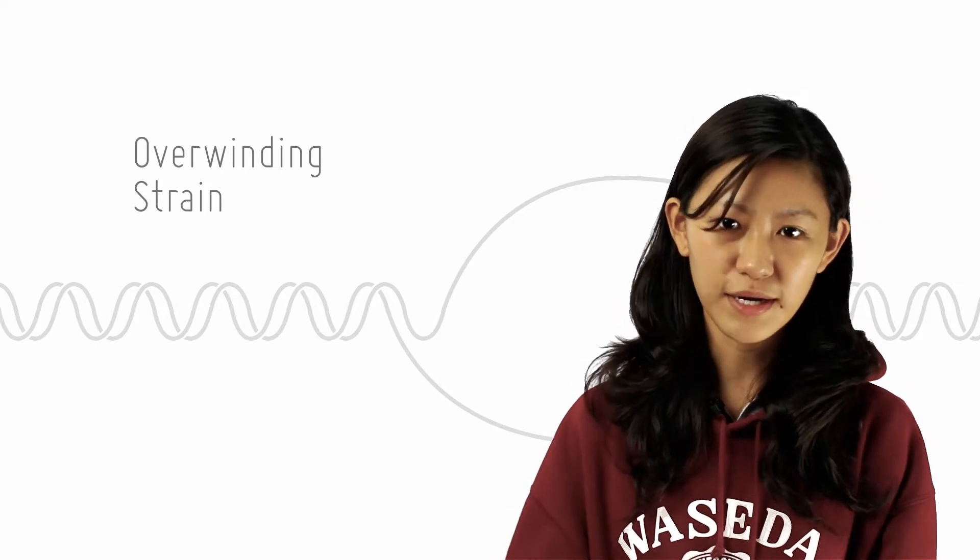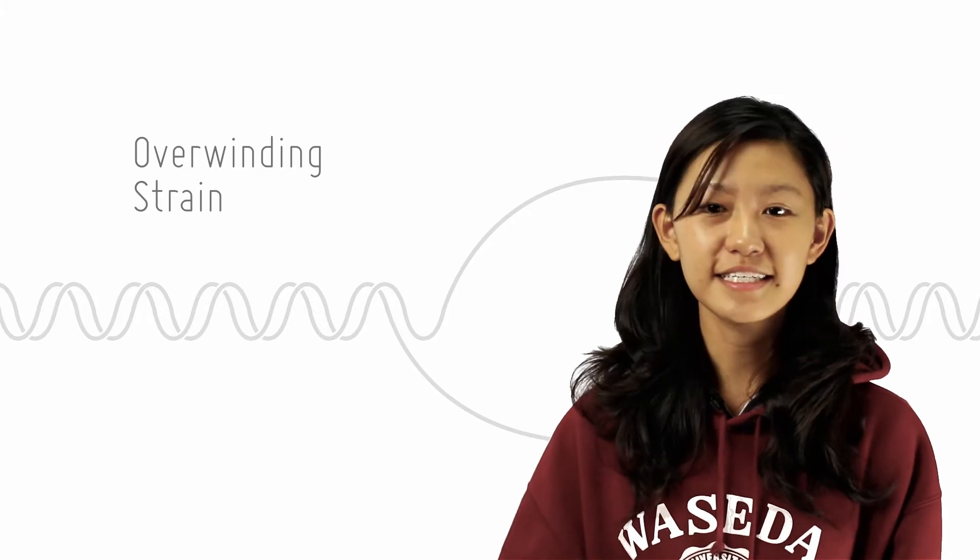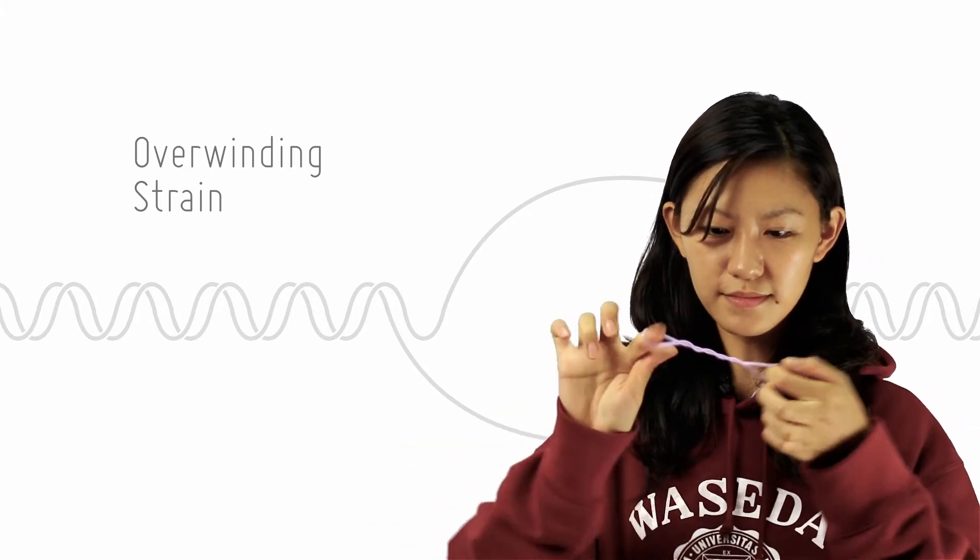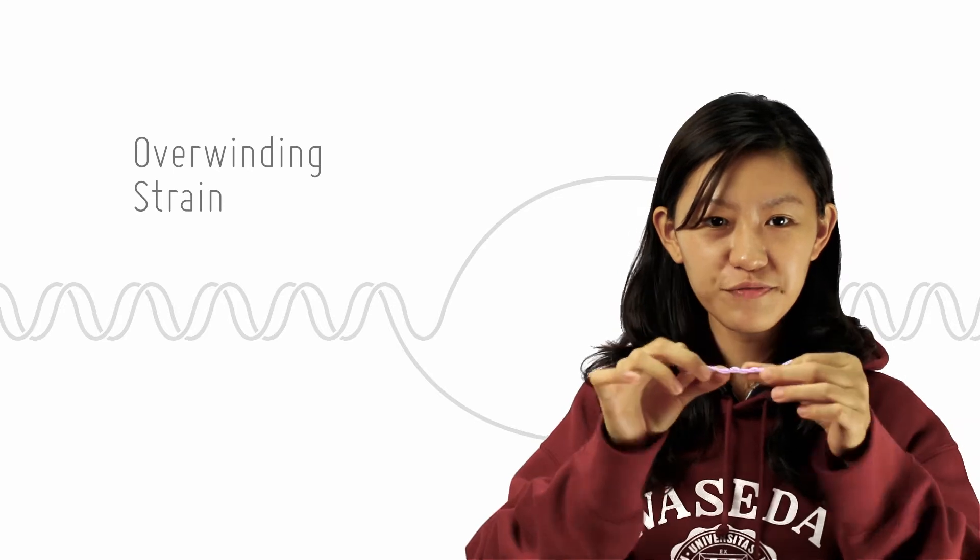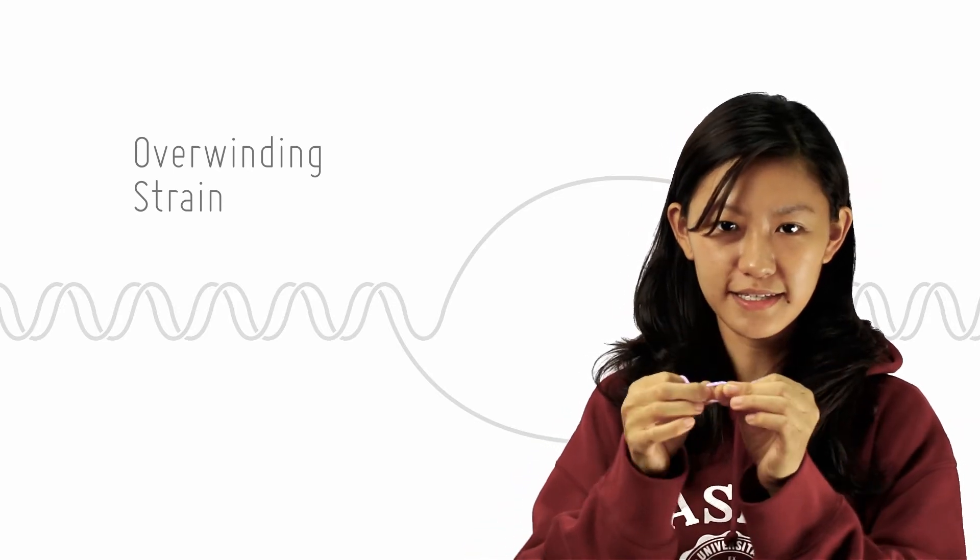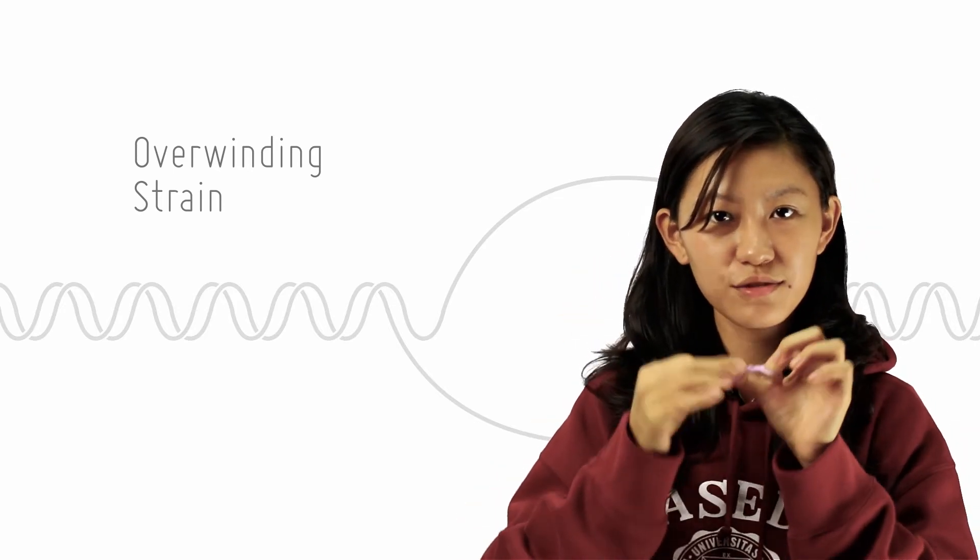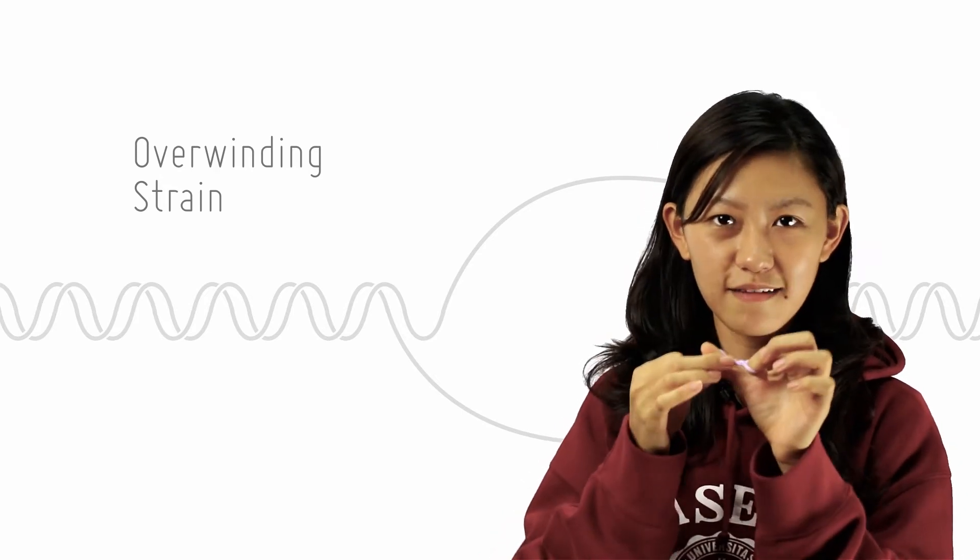How do you get overwinding strain? Imagine a twisted piece of rubber band. If you poke two fingers into one of the twisted spaces and stretch them apart, what happens in your twisted region is that the turns become tighter.